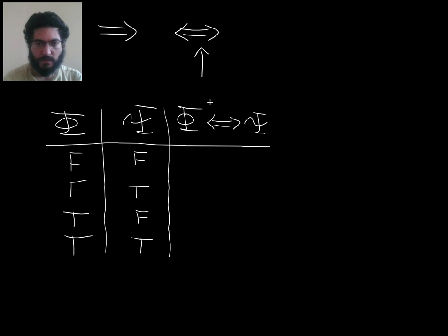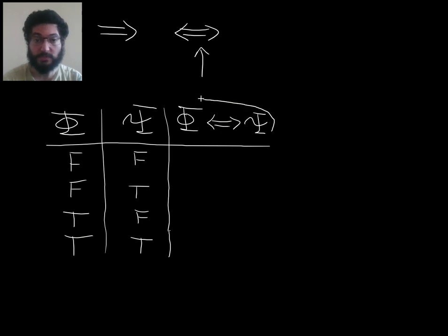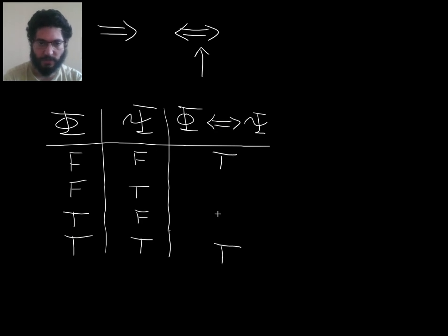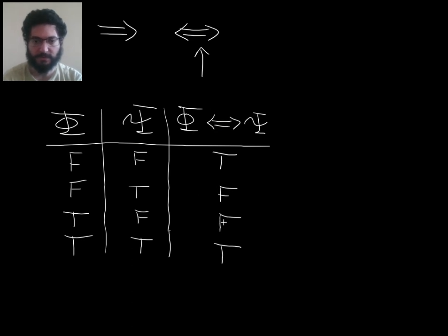Here's the answer. The truth value of phi and psi are linked by the equivalence. The equivalence is true precisely when phi and psi have the same truth value. So if they're both false, the equivalence is true. If they're both true, the equivalence is true. Otherwise, if phi and psi differ in their truth value, then the equivalence fails.